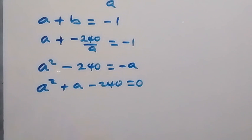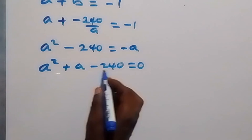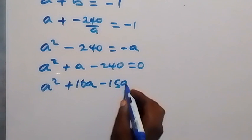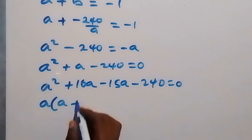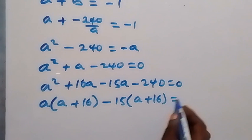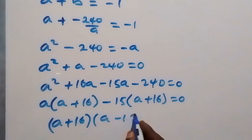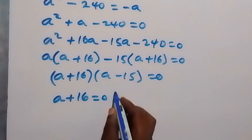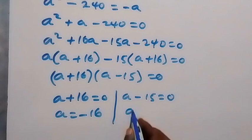We can solve this by factorizing. The two factors here will be 16a and minus 15a, which gives plus a. They multiply to give minus 240. So we have a squared plus 16a minus 15a minus 240 equals 0. Factoring a out gives a(a plus 16), and factoring minus 15 out gives minus 15(a plus 16) equals 0. With (a plus 16) common, we get (a plus 16)(a minus 15) equals 0. So a plus 16 equals 0 or a minus 15 equals 0, giving a equals minus 16 or a equals 15.